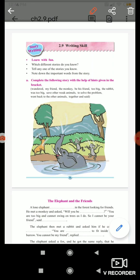Complete the following story with the help of hints given in the bracket. Wondered, my friend, the monkey. Be his friend, too big. The rabbit was too big. Save other weak animals. To solve the problem, went back to the other animals together and said.